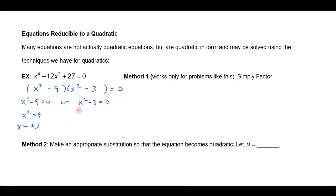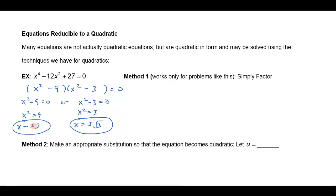And same thing here — bring the 3 over and extract the square roots. So notice there are actually four answers to this: plus 3, minus 3, and plus square root of 3, and minus square root of 3.